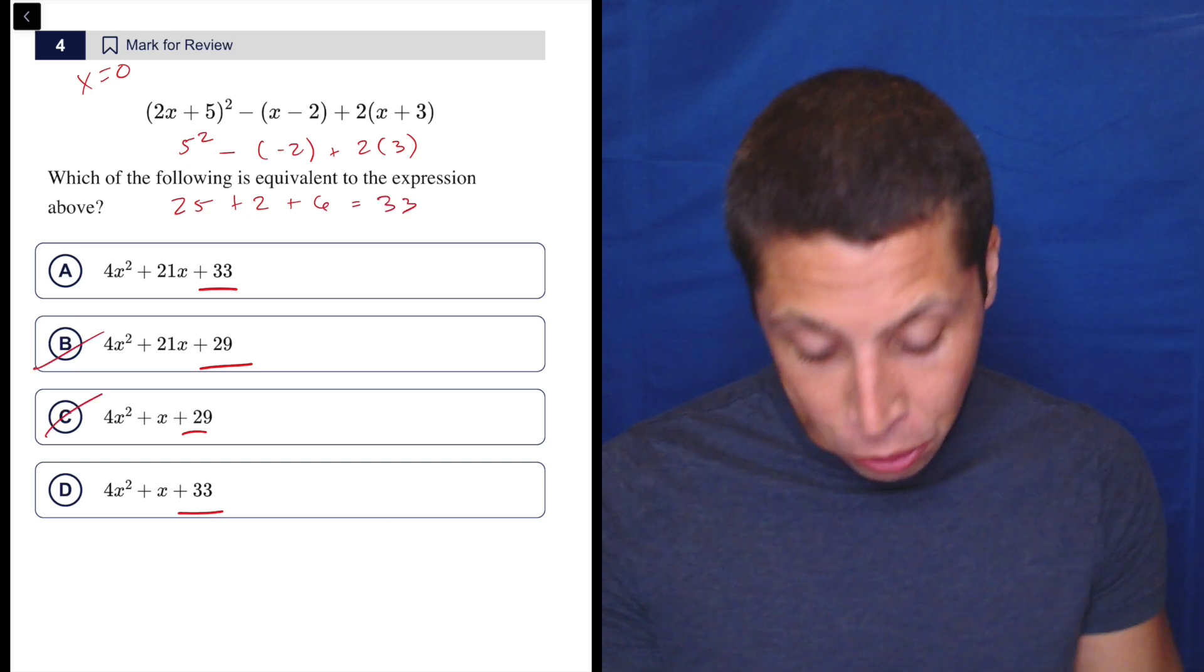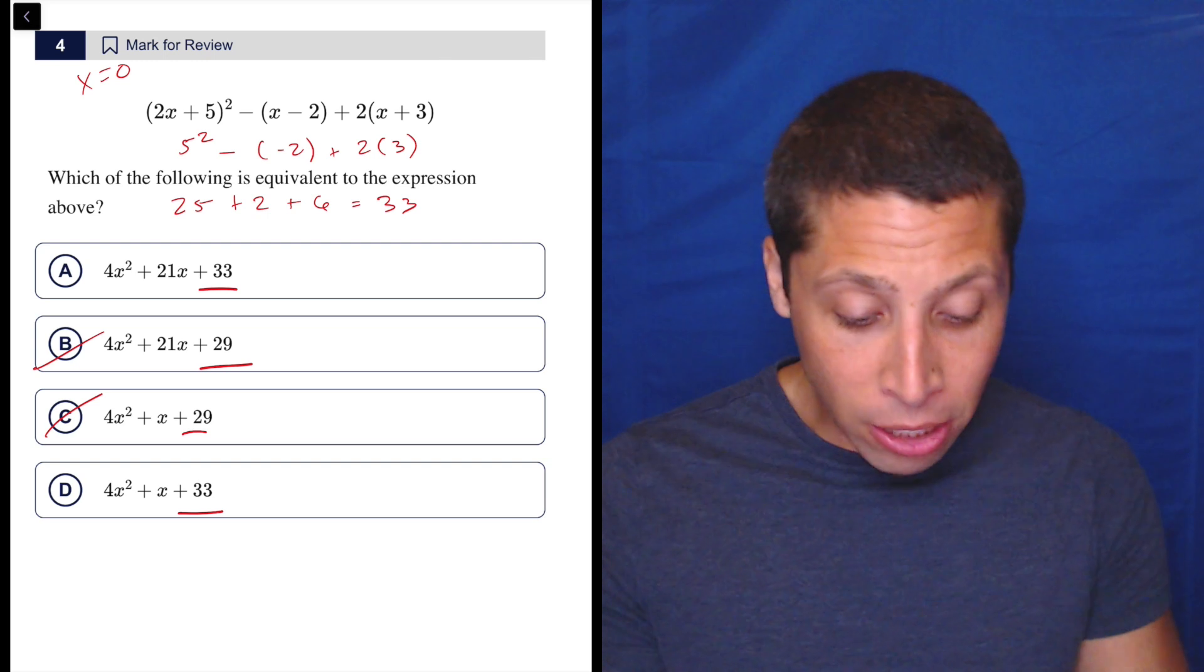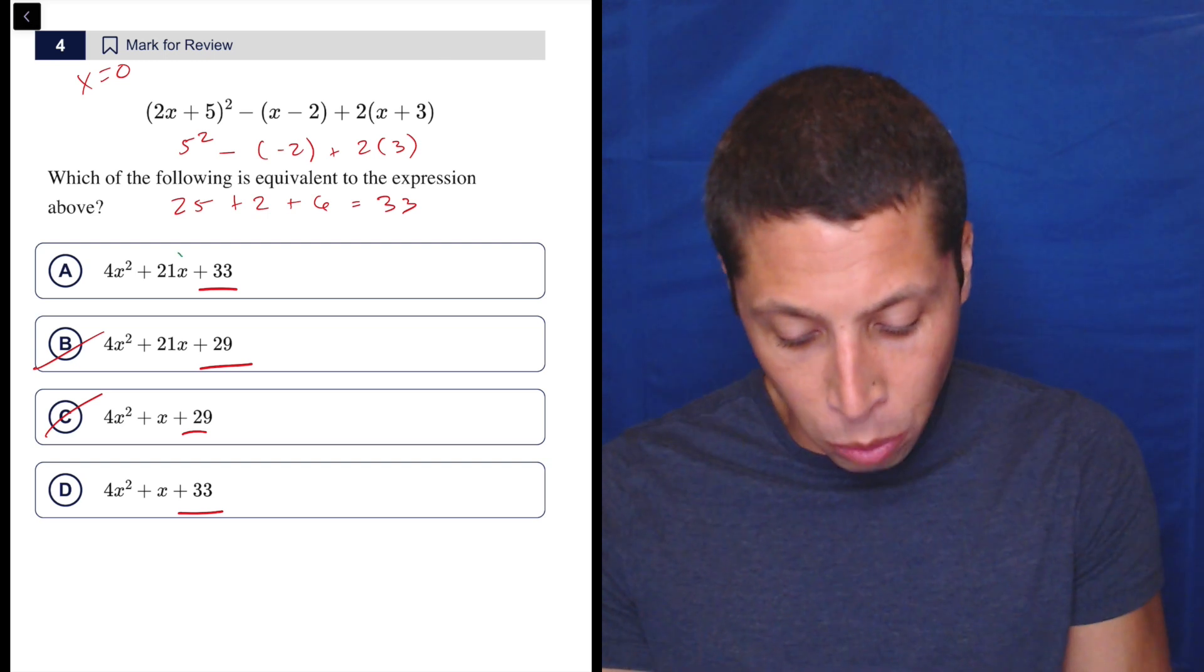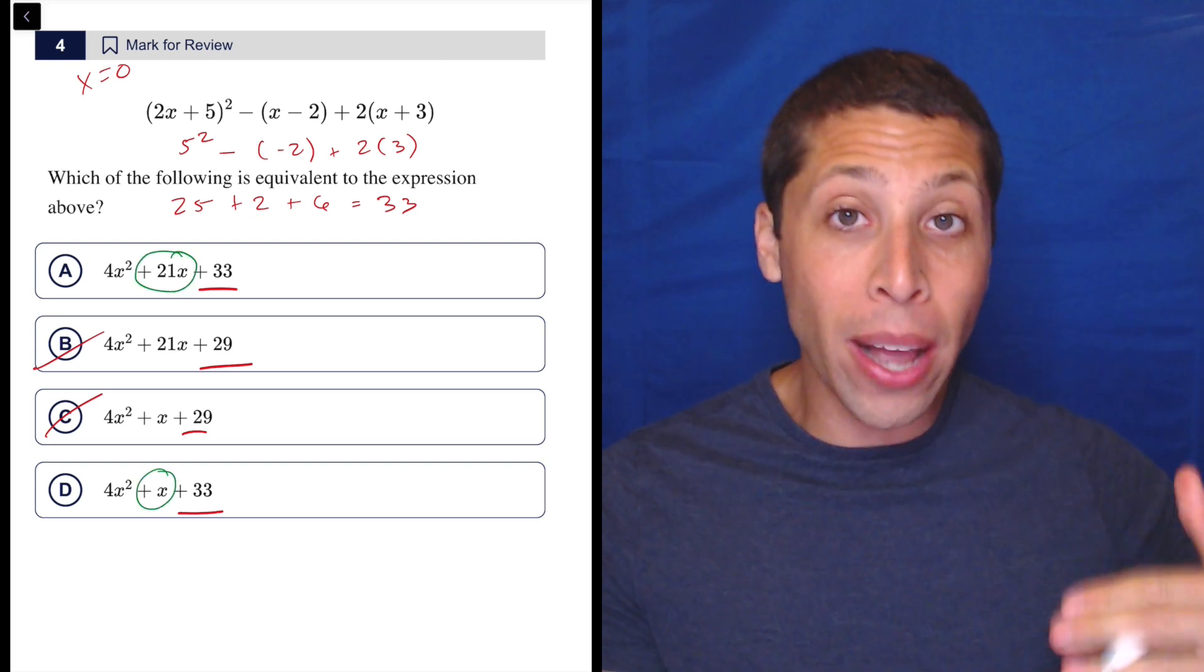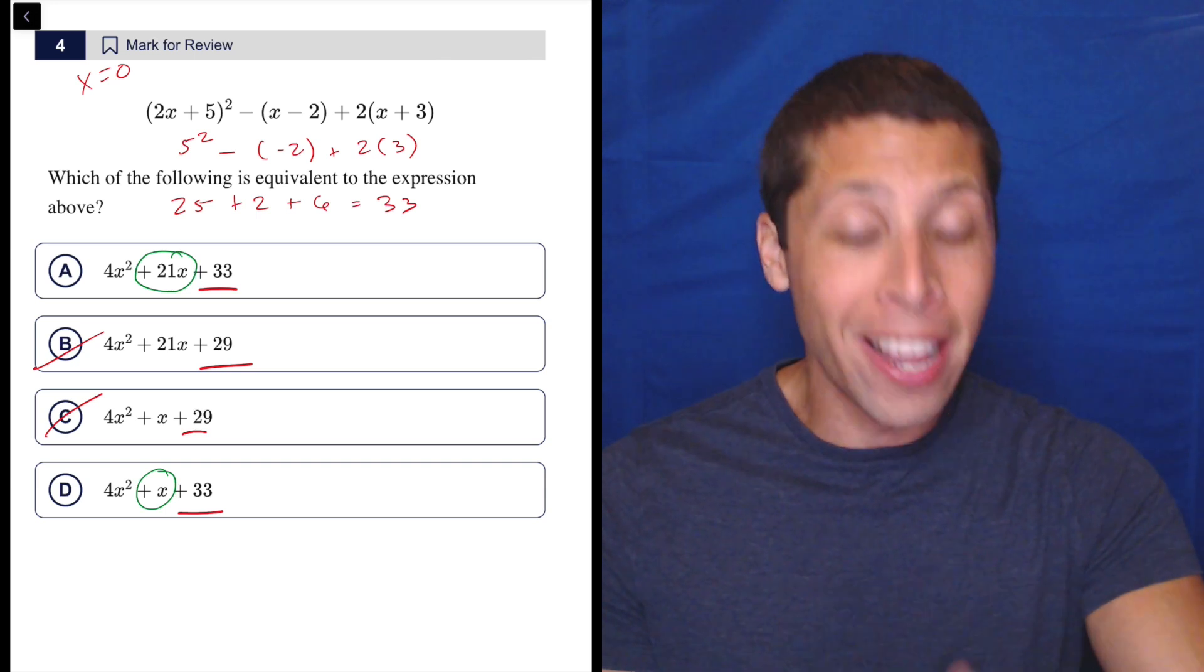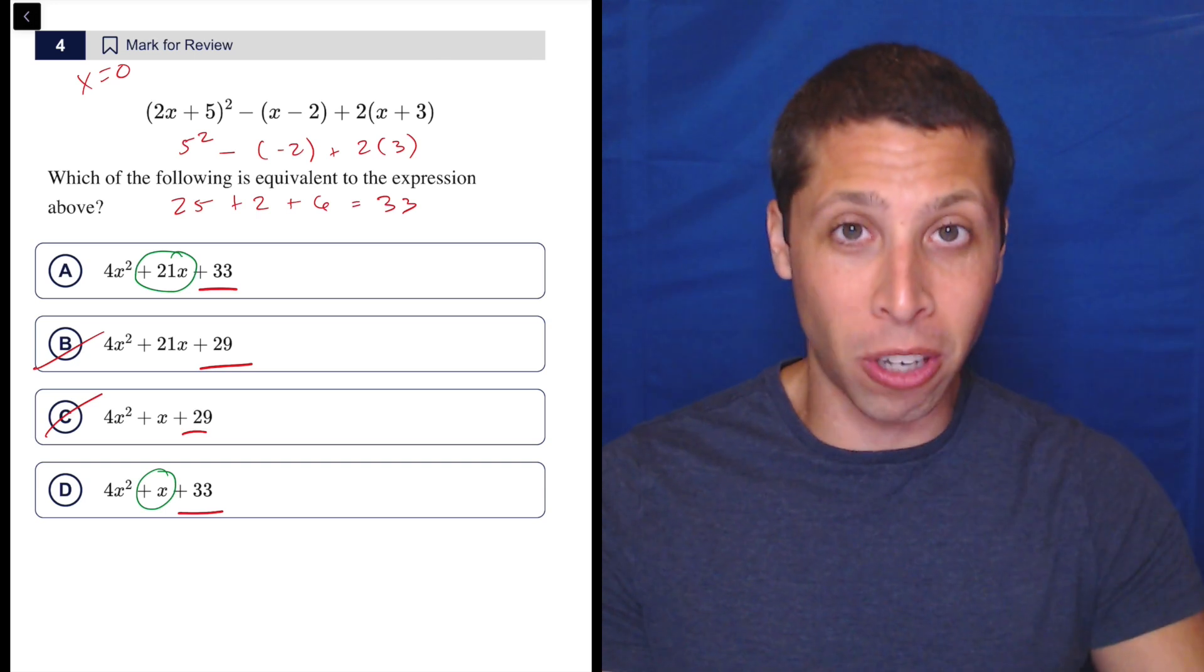So right away, boom, two choices are down. And now I can just compare what's the difference between the choices, 21x or x, right? So now I can do the algebra if I want and I can do it exclusively focused on that piece.